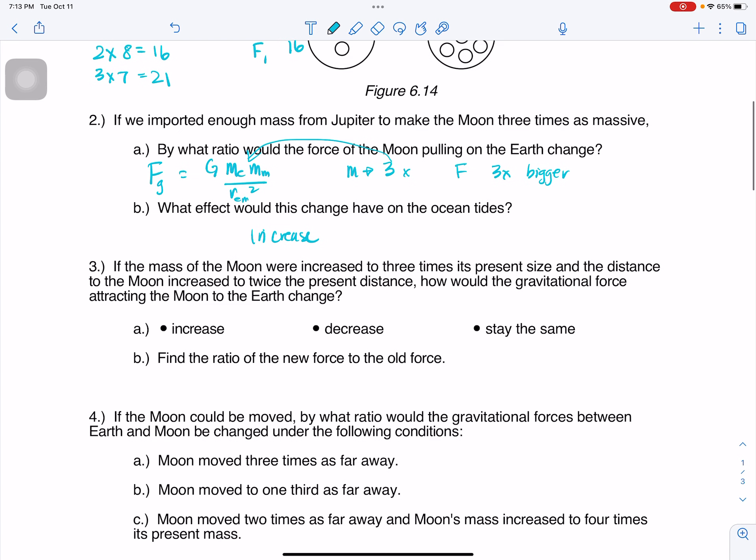Alright, if the mass of the moon were increased to 3 times its present size, and the distance to the moon increased to twice the present distance, how would the gravitational force attracting the moon to the Earth change? It would decrease.